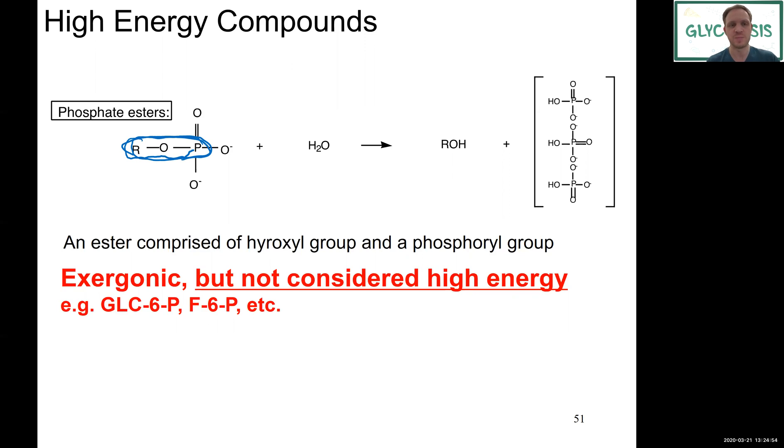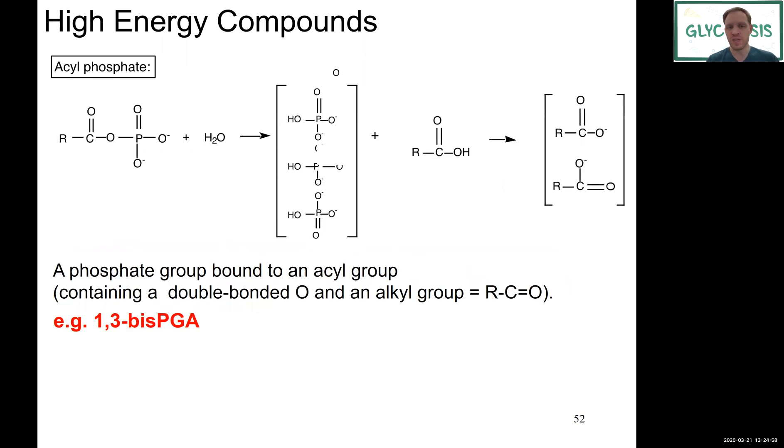What is a high energy compound are acyl phosphates. These are phosphate groups that are bound to an acyl group. What's an acyl group? Broadly speaking, an acyl group would be a functional group that contains a double bonded oxygen to another rest, which should be an alkyl group.